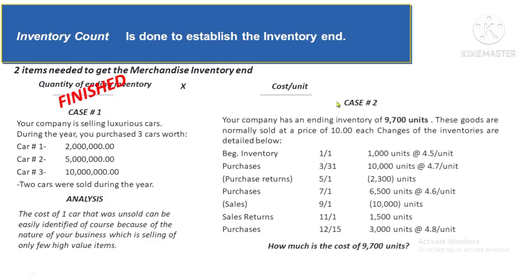Scenario 2: goods are purchased in large quantities, at different dates and different prices. With an ending inventory of 9,700 units sourced from multiple purchase batches at costs of 4.5, 4.7, 4.6, and 4.8 per unit, it would be very difficult — if not impossible — to specifically trace each unit's cost. Instead of specific identification, other methods are used to get the cost per unit.